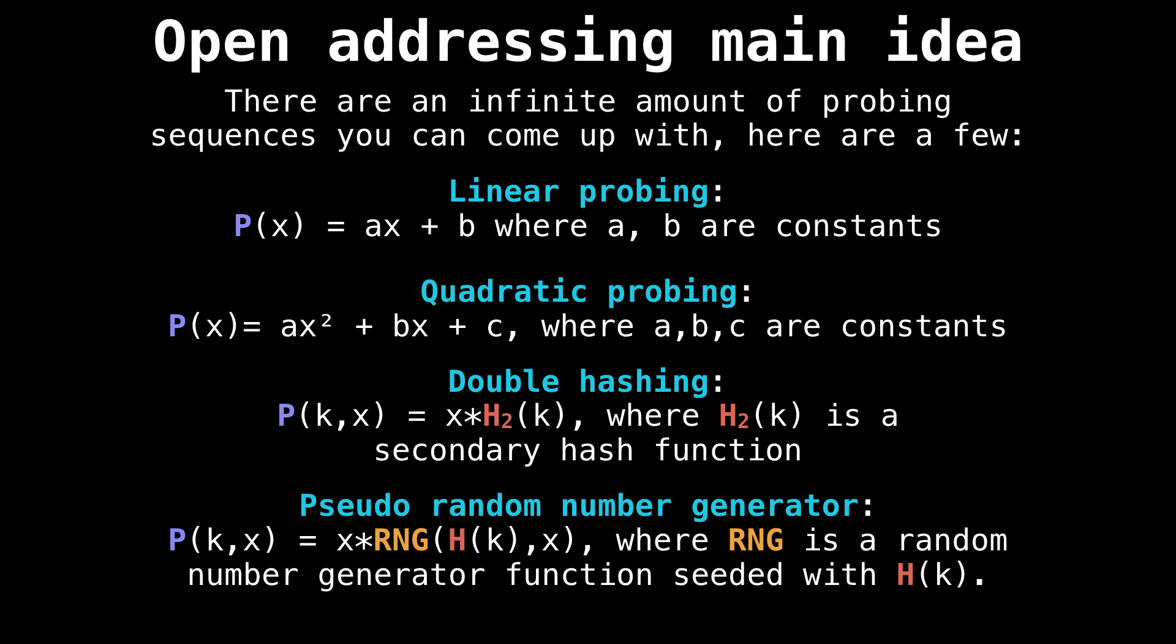Given an input parameter x, when we're probing, we start usually x at zero or one. And as we're unable to find free slots, then we just increment x by one. And it works the same for all of these probing functions. For linear probing, we use a linear function. For quadratic probing, we use a quadratic function.